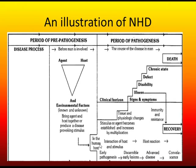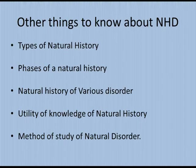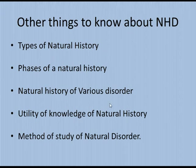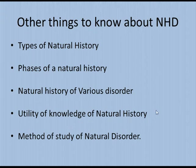So all these phenomena involve the human host, and the natural history of disease has been divided broadly into a pre-pathogenesis phase and a pathogenesis phase based on how deeply the human host gets involved in the disease process. With that illustration, we put an end to this video lecture. Before leaving, here is a list of other things you need to know: the types or phases of natural history, the natural history specific to each disorder, the utility of natural history, and most importantly, the method of studying the natural history of any disorder.